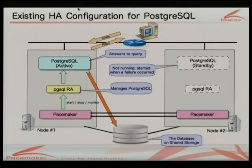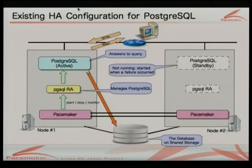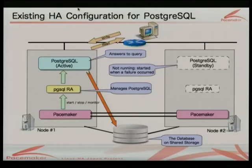What we did is build on the already existing active-standby configuration. It's pretty simple and typical usage. There are two physical nodes both running pacemaker, and on the active node the PostgreSQL database is running. Pacemaker starts up the PostgreSQL database through the resource agent script. When the active node fails, pacemaker detects it and starts PostgreSQL on the standby node. The data is on shared storage — this is a pretty typical active-standby configuration. Now we have a replication feature.